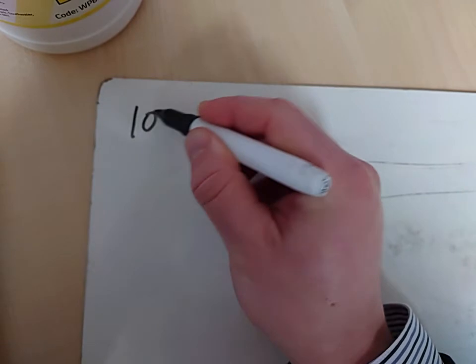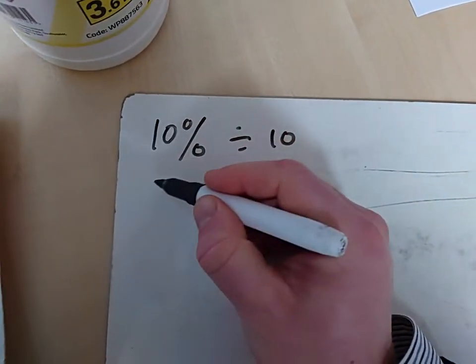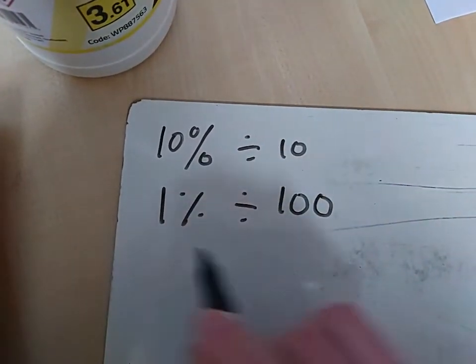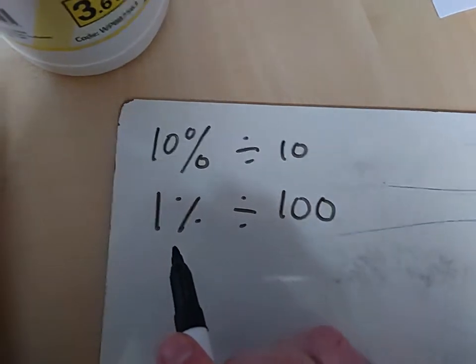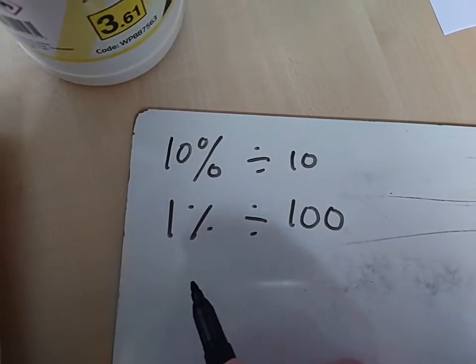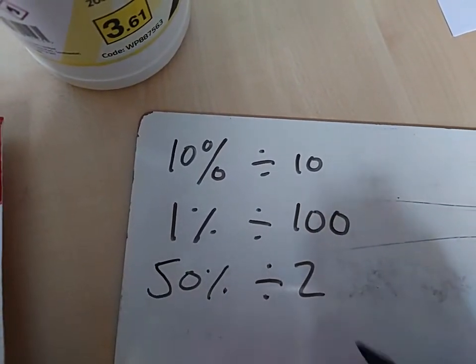What you need to know is that to find 10% of a number, you divide by 10. To find 1% of a number, you divide by 100. It's a bit confusing, because you'd expect that to be 1, but it's not. It's actually you divide by 100. And 50%, you divide by 2.